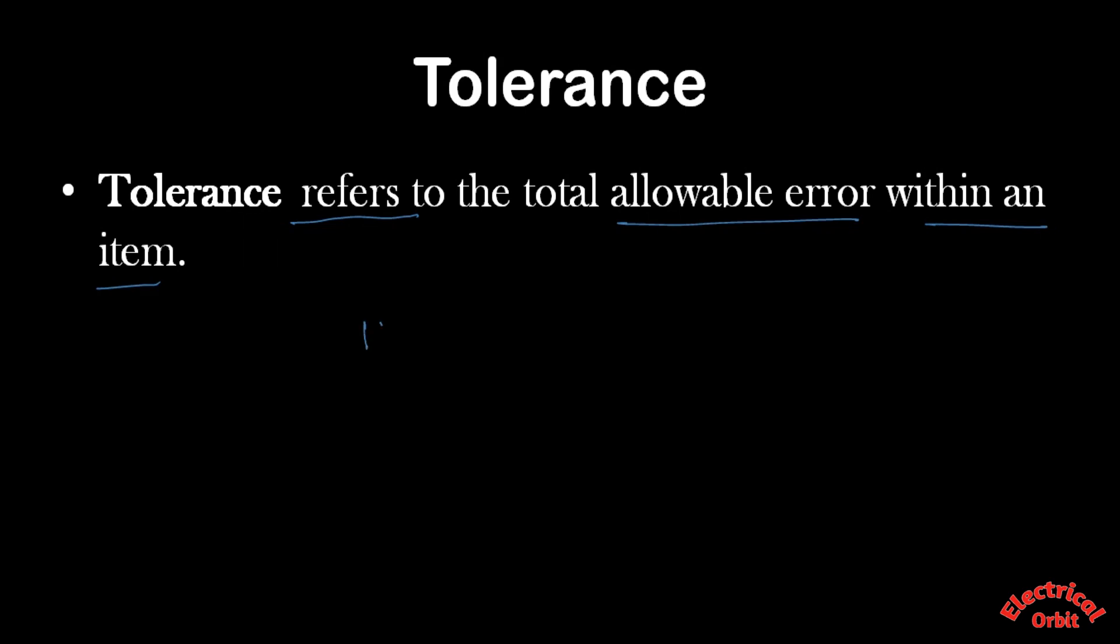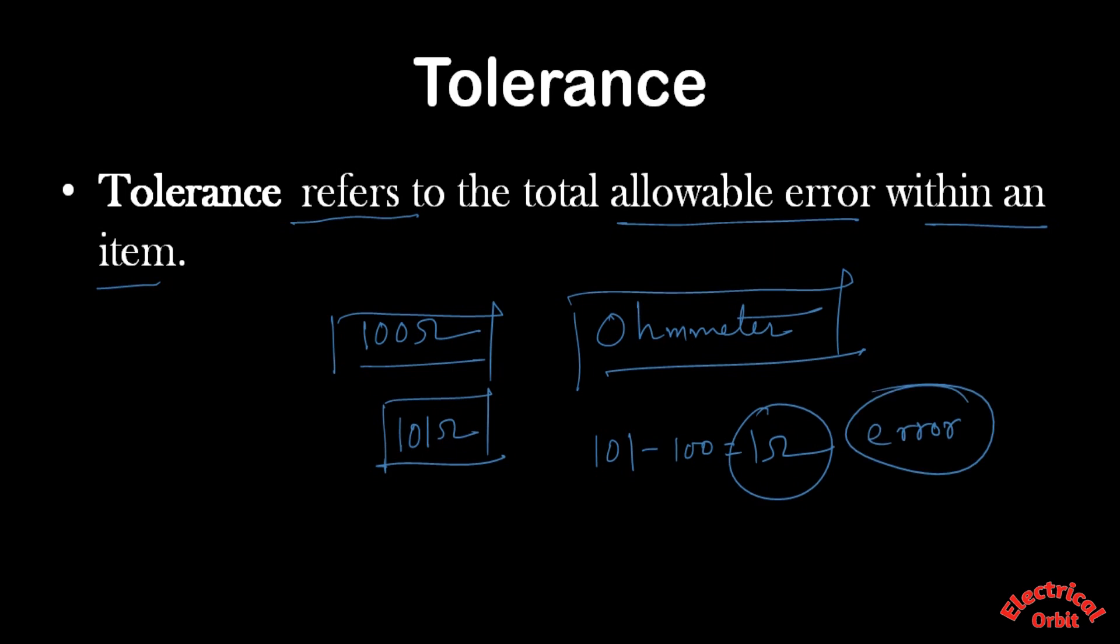If we are using an ohm meter which gives us a reading of this 100 ohm resistance as 101 ohm, then there is one ohm error. Now when the ohm meter maker is selling this particular ohm meter in market...